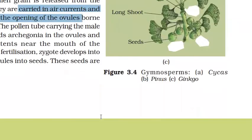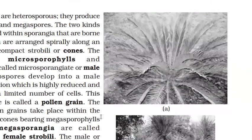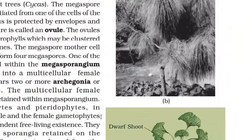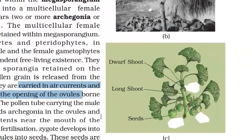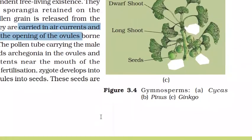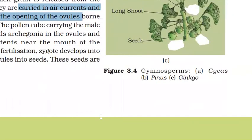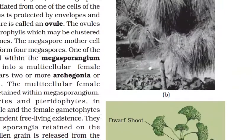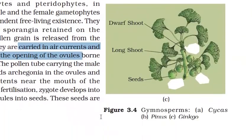Looking at the diagram of gymnosperms, you can see shoots — dwarf and long. The seeds are naked seeds and fruits and ovary walls do not enclose them. The examples shown are Cycas, Pinus, and Ginkgo.